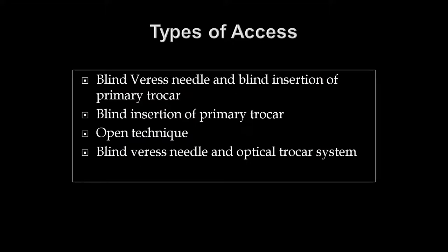There are four different types of peritoneal access: number one, blind Veress needle followed by blind insertion of primary trocar; number two, blind insertion of primary trocar directly without using a Veress needle; number three, using Hassan's open technique; and finally, blind Veress needle followed by an optical trocar system.